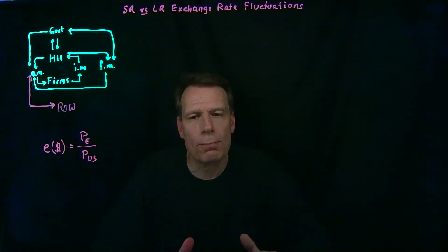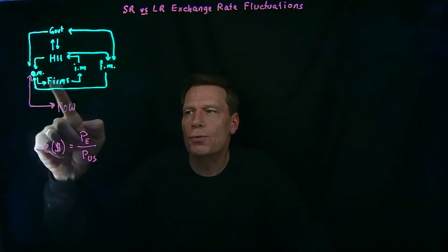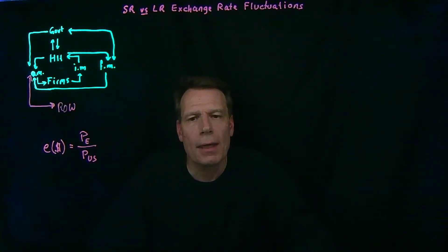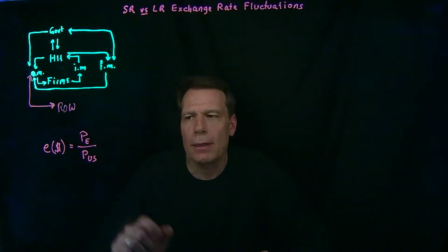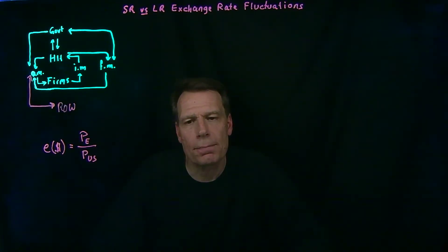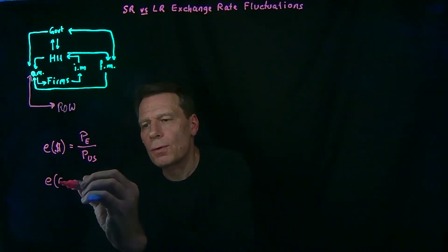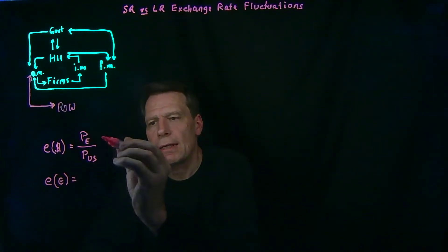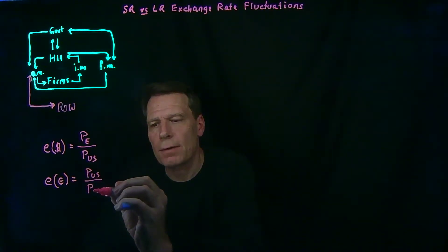We've now seen how the law of one price, in the form of purchasing power parity, affects exchange rates through trading in output markets. The exchange rate for the dollar in terms of euros is driven by purchasing power parity to the price level in Europe divided by the price level in the US. And we can similarly write the exchange rate for euros in terms of dollars as the inverse: the price level in the US divided by the price level in Europe.